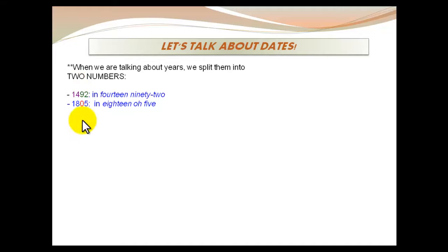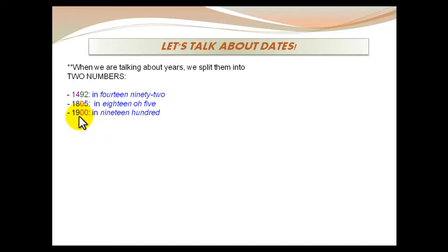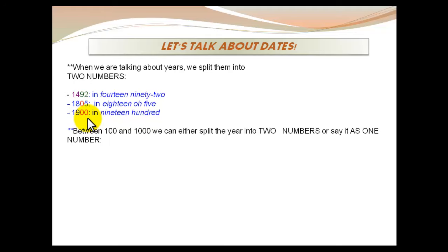What happens when we find a zero in the third digit? It's very easy — we say 1805 as eighteen O five. When we find two zeros at the end, we say 1800 as eighteen hundred. Between 100 and 1000, we can say both: we can divide it into two numbers or say it as a single number. For example, 711 can be said as seven eleven or seven hundred eleven — both are correct.